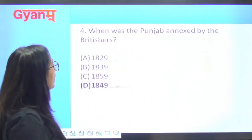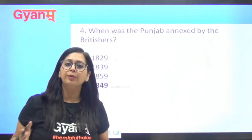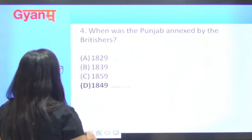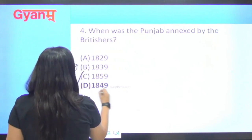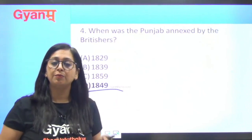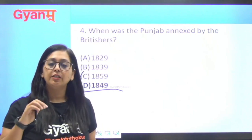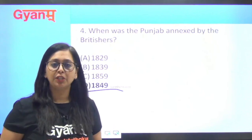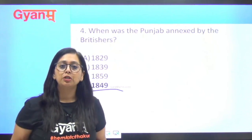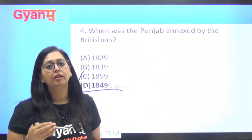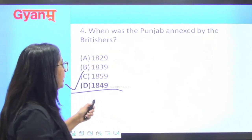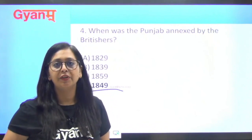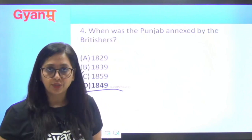Next question: when was Punjab annexed by the British? The right answer is 1849. In 1849, the Second Anglo-Sikh War ended and after that, Punjab came under British control. At that time, the Governor General of British India was Lord Dalhousie. So another question that often comes is: who was the Governor General when British annexed Punjab? The answer is Lord Dalhousie.